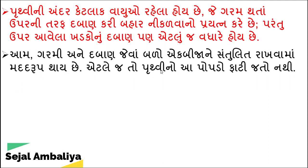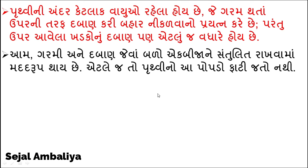ઉપર ના જે ખડકો આવેલા છે, તેનું દબાણ ઉપર થી નીચે એટલું હોય છે. આ ગરમી અને દબાણ જેવા બળો એક બીજા ને સંતુલિત રાખવા માં મદદ રૂપ થાય છે. એટલે જ પૃથ્વી નો પોપડો ફાટી જતો નથી. ગરમ વાયુઓ ઉપણ ની તરફ આવે છે અને ઉપર ના ખડકો નું દબાણ નીચે ની તરફ થાય છે.